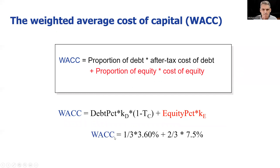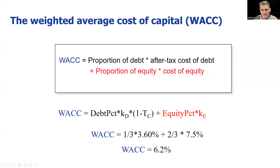Plugging in our numbers: the percentage of debt is one third, times 3.6% — that is the after-tax cost of debt we calculated earlier — plus two thirds of the cost of equity. Put it all together, and that is going to be our cost of capital, our hurdle rate, our required return, our technically weighted average cost of capital. We're going to use this number to do our NPVs on capital investment projects, assuming they are as risky as the company is as a whole.